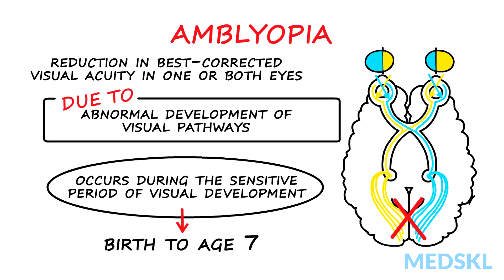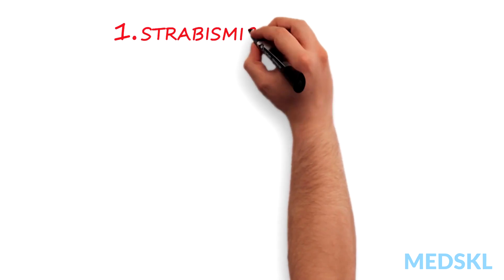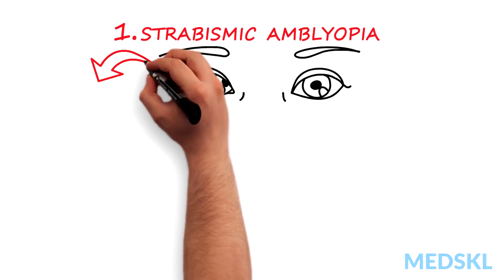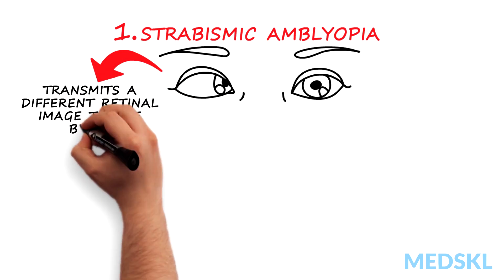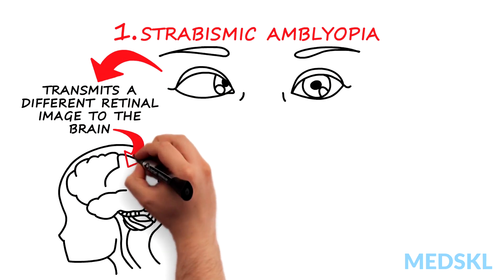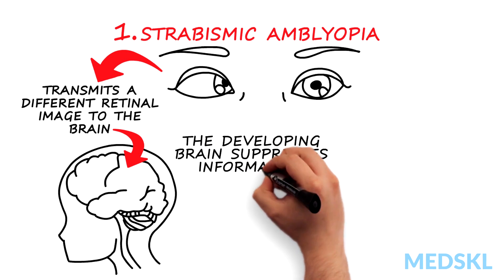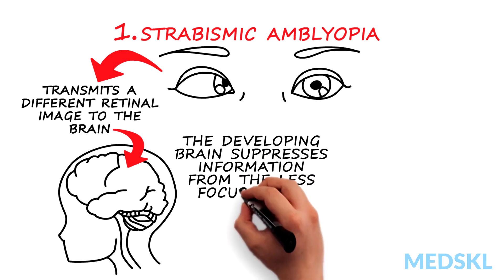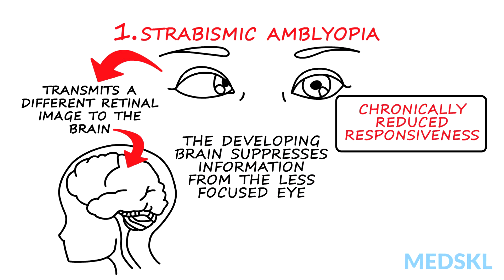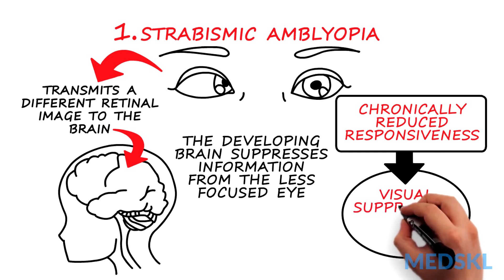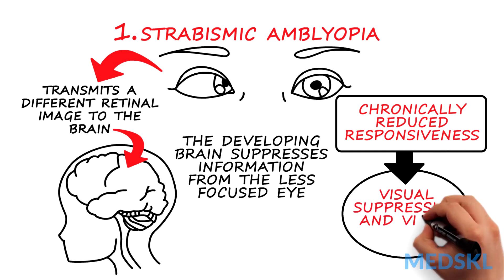There are three causes of amblyopia that you cannot miss. 1. Strabismic amblyopia. Strabismus, or misalignment of the eyes, transmits a different retinal image to the brain, causing the developing brain to suppress information from the less-focused eye. Chronically reduced responsiveness to input by the non-fixing eye leads to visual suppression and vision loss.